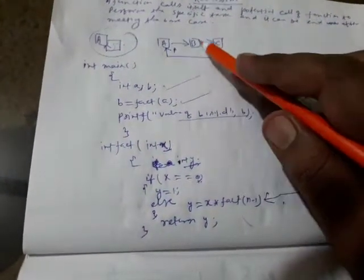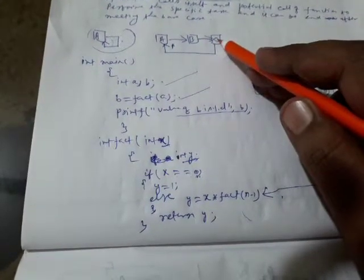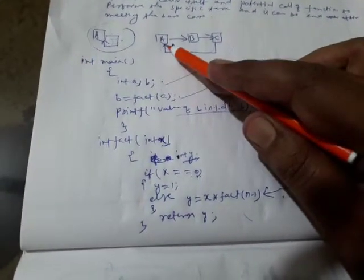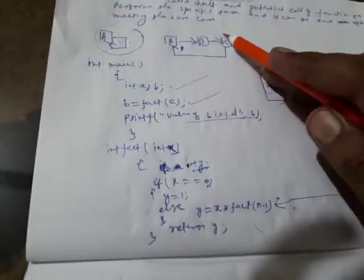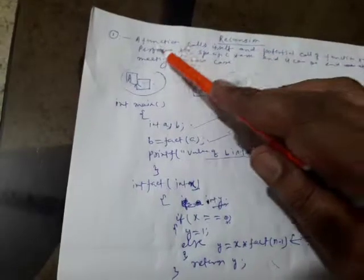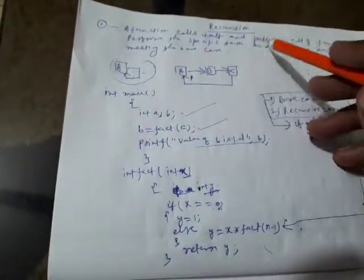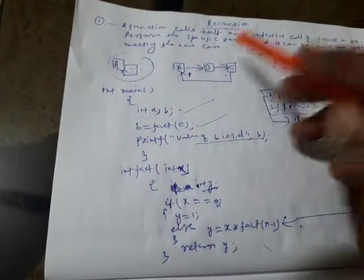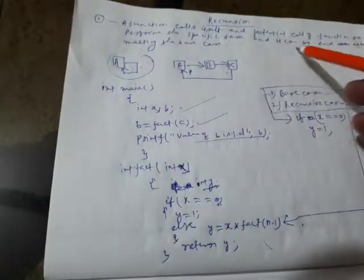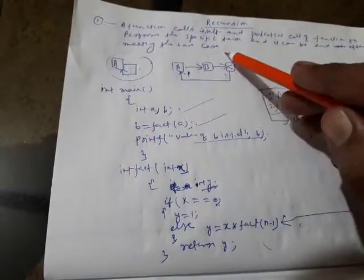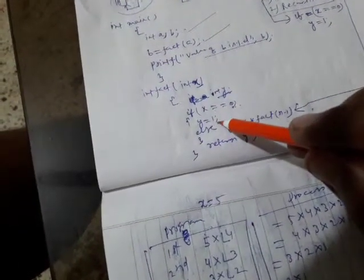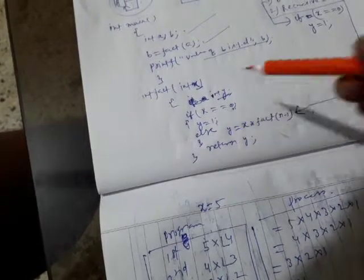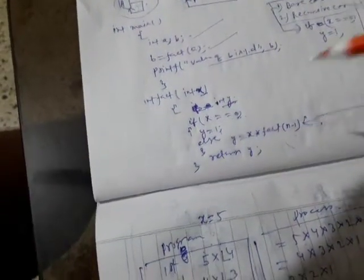There is also a potential call: suppose A calls B, B calls C, and then C calls A again — so A is indirectly calling itself. That is the correct definition of recursion: a function calls itself, either directly or potentially, to perform a specific task, and it ends after meeting the base condition. The base condition here is when x equals 0.